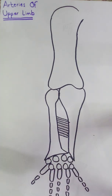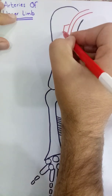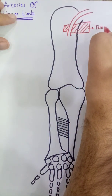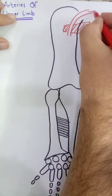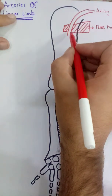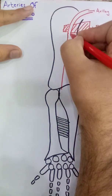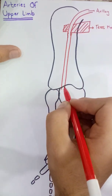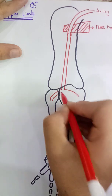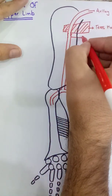First of all we will discuss the brachial artery. The brachial artery originates from the axillary artery as the axillary artery passes through the inferior border of the teres major muscle. As it passes that point it changes to the brachial artery, and this brachial artery will continue till the cubital fossa where it will divide into the radial artery on one side and the ulnar artery on the other side.